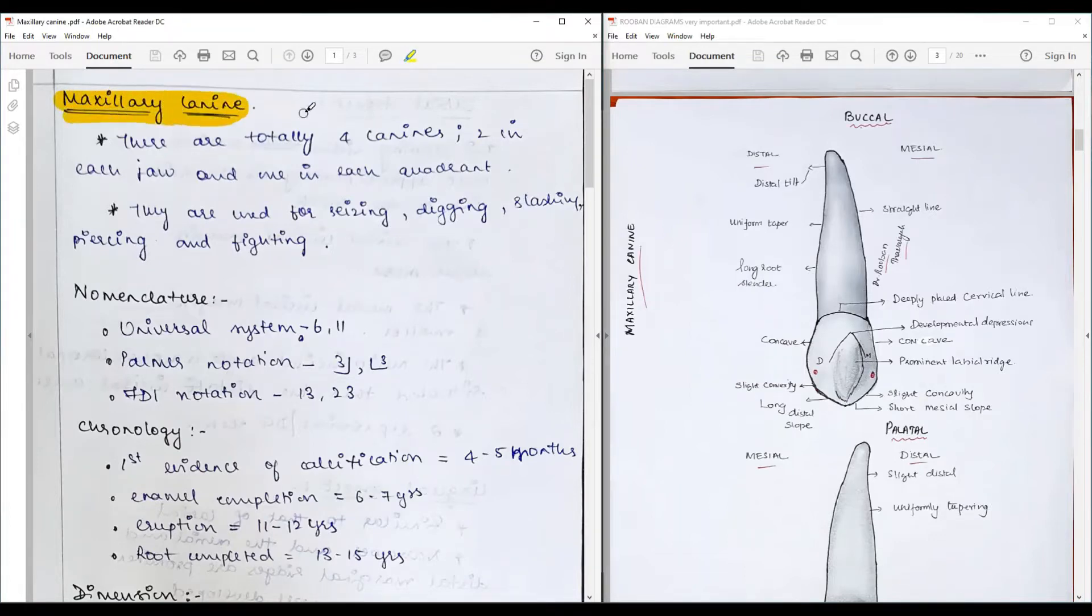Introduction: Four canines, two in each jaw and one in each quadrant. They are used for seizing, digging, slashing, piercing, fighting, and tearing, most important. Because they are one of the longest teeth in the arch with the longest root, they are the stablest tooth in the arch.